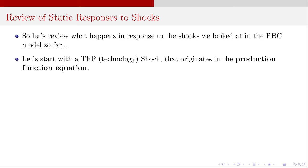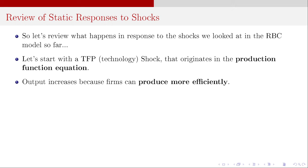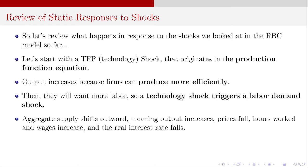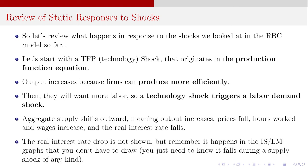We'll start with a TFP shock. This originates in the production function equation — output increases because firms can produce more efficiently. If they can produce more efficiently, they're going to need more labor, so this technology shock triggers a labor demand shock. Therefore, labor goes up, wages go up, output goes up. When output goes up, that leads to a shift in the aggregate supply curve, meaning output goes up and prices fall. Because that labor demand shock was triggered by the technology shock, hours worked and wages increase, and we have a reduction in the real interest rate.